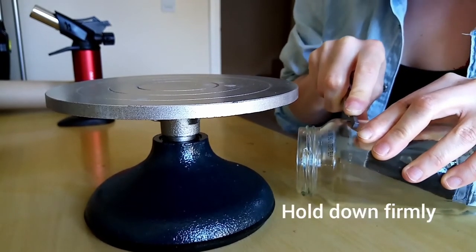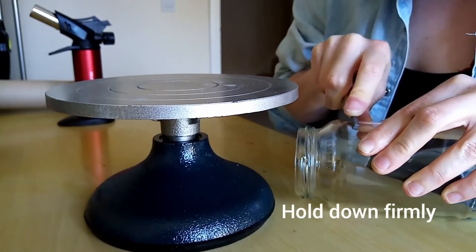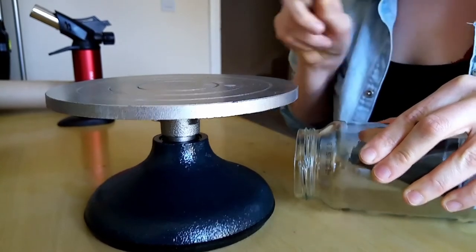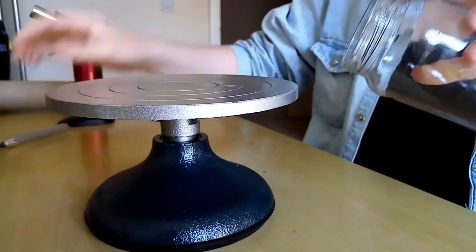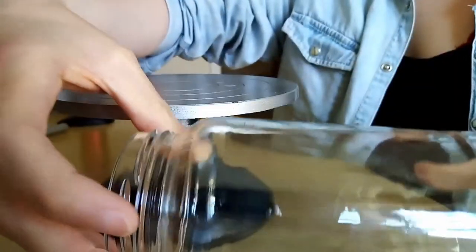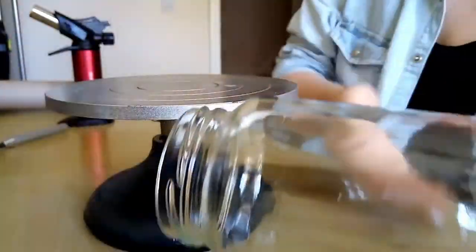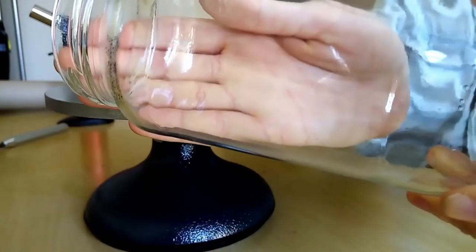You're going to start by putting a small score line in your glass. For this, use a corner of this tungsten score, hold down firmly and drag it so that it's a few millimeters long. When the glass heats up with our torch it causes stress in it, and the score line just directs that stress so that it cracks all the way around.